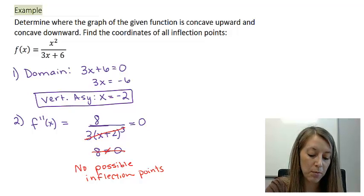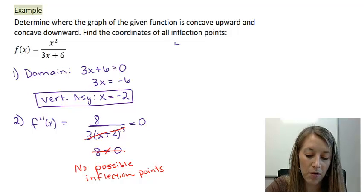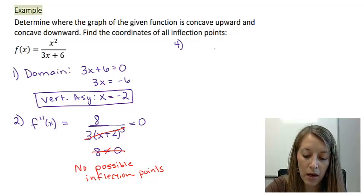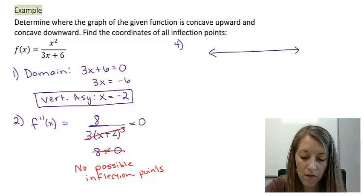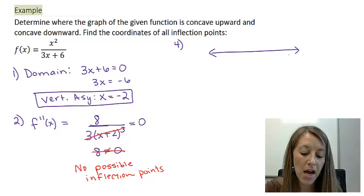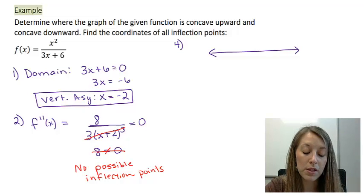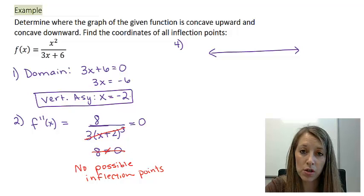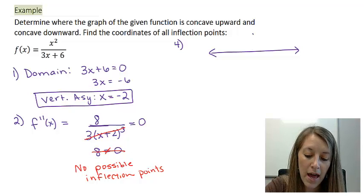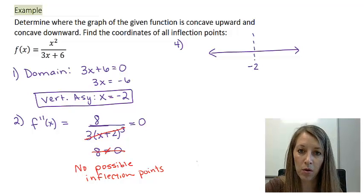It is possible to not have any inflection points on your graph, and that is shown in this example. That was step three. In step four, we need to set up our number line. We might think we don't have anything on our number line, but in fact we do. Remember, you also need to include your domain restrictions.